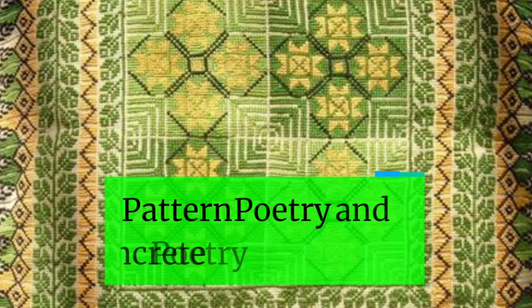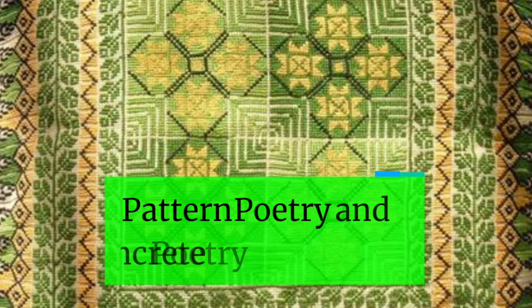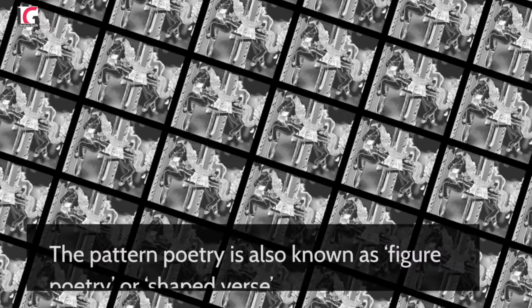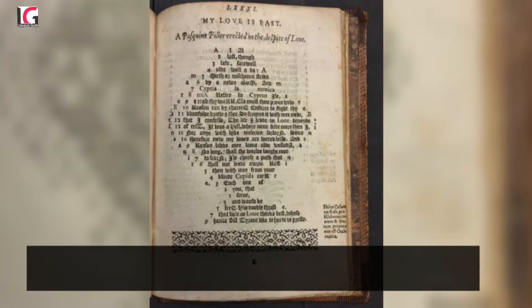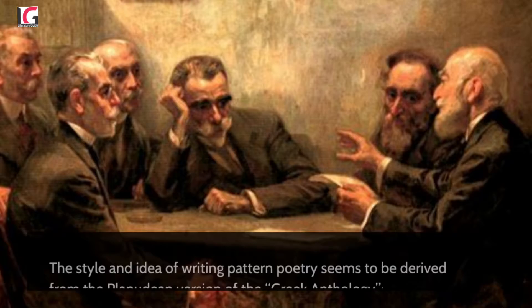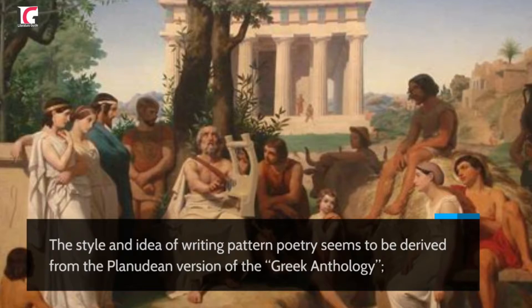Pattern poetry refers to a kind of experimental poetry which appeared on the literary scene in the 16th century. It is also known as figure poetry or shaped verse. The origin of pattern poetry can be traced in the works of the Greek poets. The style and idea of writing pattern poetry seems to be derived from the Planudian version of the Greek anthology, which was the only known anthology of Greek epigrams and poems.